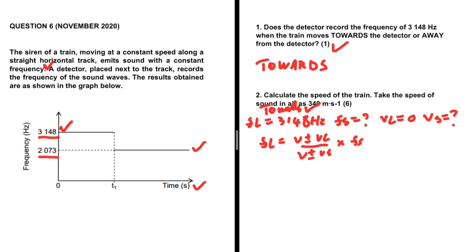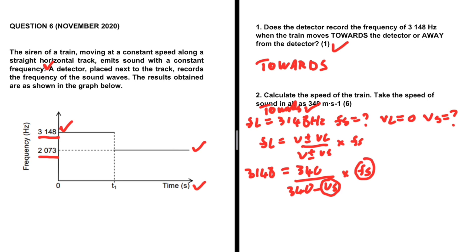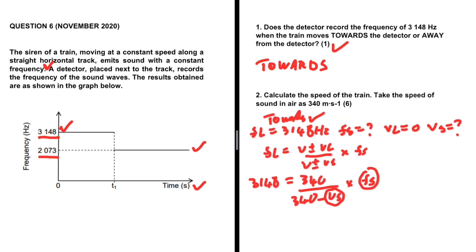For the train moving towards the detector, fL equals 3148, the speed of sound is 340, the listener is stationary so vL is zero, and we use minus vS in the denominator because the source is moving towards. This gives us 3148 equals 340 divided by (340 minus vS) multiplied by fS. We have two unknowns, vS and fS, so we need a second equation. This becomes Equation 1.